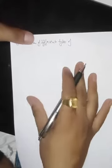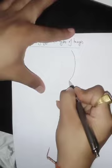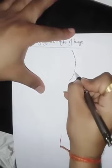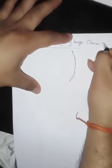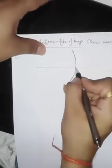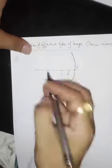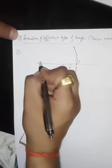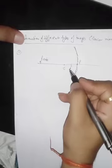Formation of different types of images formed by concave mirror — we will use some shortcut keys. First, let us draw a concave mirror. This is for the concave mirror: the pole, the focus, and the center of curvature. Now note where we place the object along the principal axis and where the image will be obtained.